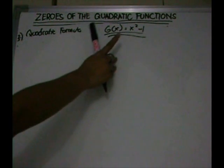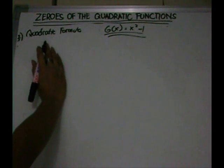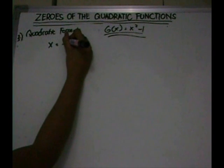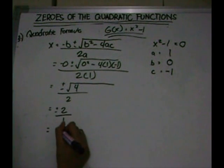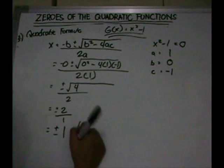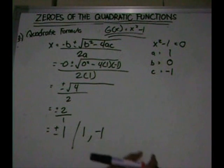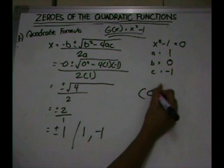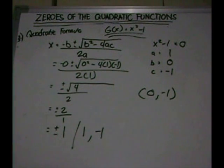Again, as an example, first let us determine what the quadratic formula is. Quadratic formula: x is equal to negative b. That's negative one, or one and negative one. Then again, we'll find its axis of symmetry. Its axis of symmetry will be equal to zero, which is the same as the earlier results.